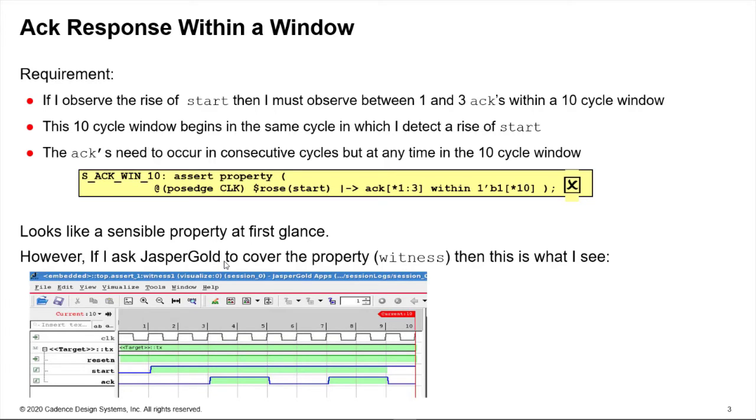So if in JasperGold, which is a formal verification tool, I say to the tool show me an example of this property passing, I might see a waveform like this and wonder why, you know is this a bug with the tool.